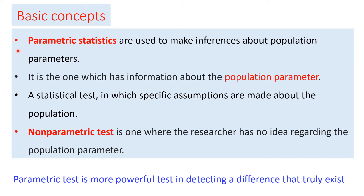Parametric statistics is used to make inferences or conclusions about the population parameters based on the samples drawn from the population. It is the approach where we have information about the population parameters, and specific assumptions are made about the population that we have to consider.